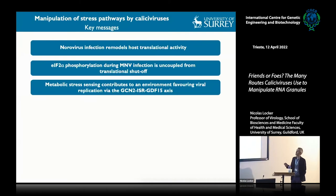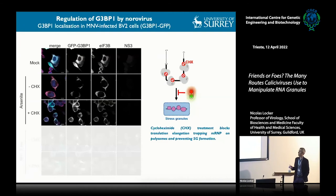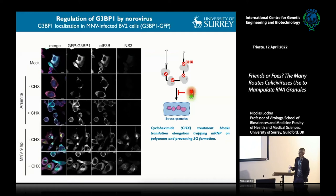Going back to the question of stress granules: we have a translational shutoff and non-canonical signaling dissociated from PKR, so what is the impact on stress granule formation? When we looked at the impact of translational shutoff on stress granule assembly in infected cells, we saw that MNV infection was not associated with the typical relocalization of G3BP1 into stress granules. Instead, we observed colocalization of G3BP1 with the replication complex NS3 into bodies that are insensitive to cycloheximide treatment—different from stress granules.